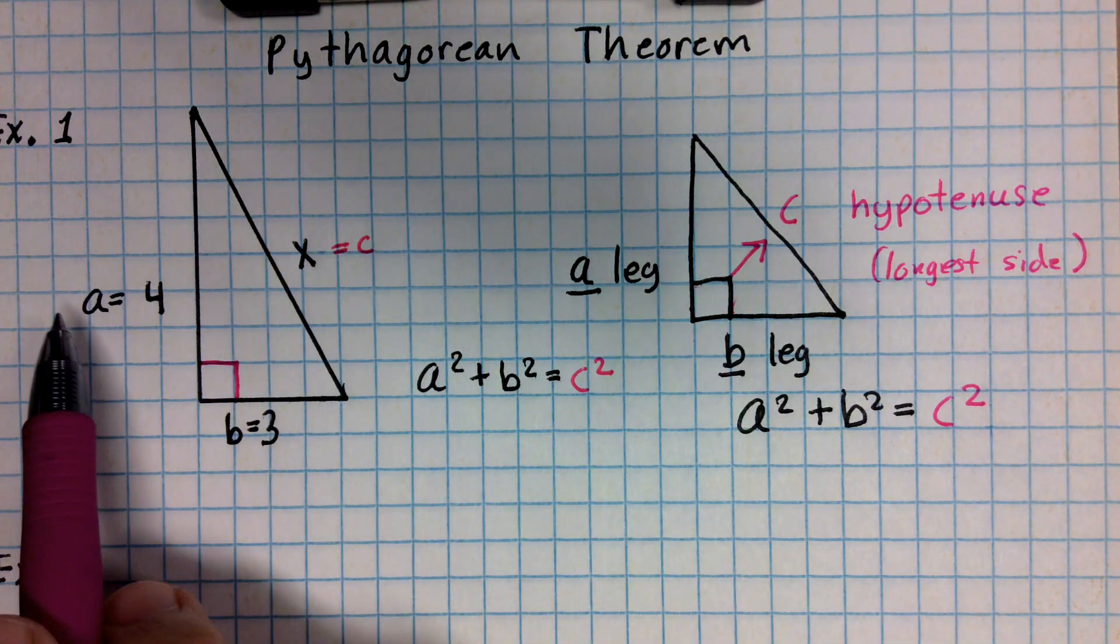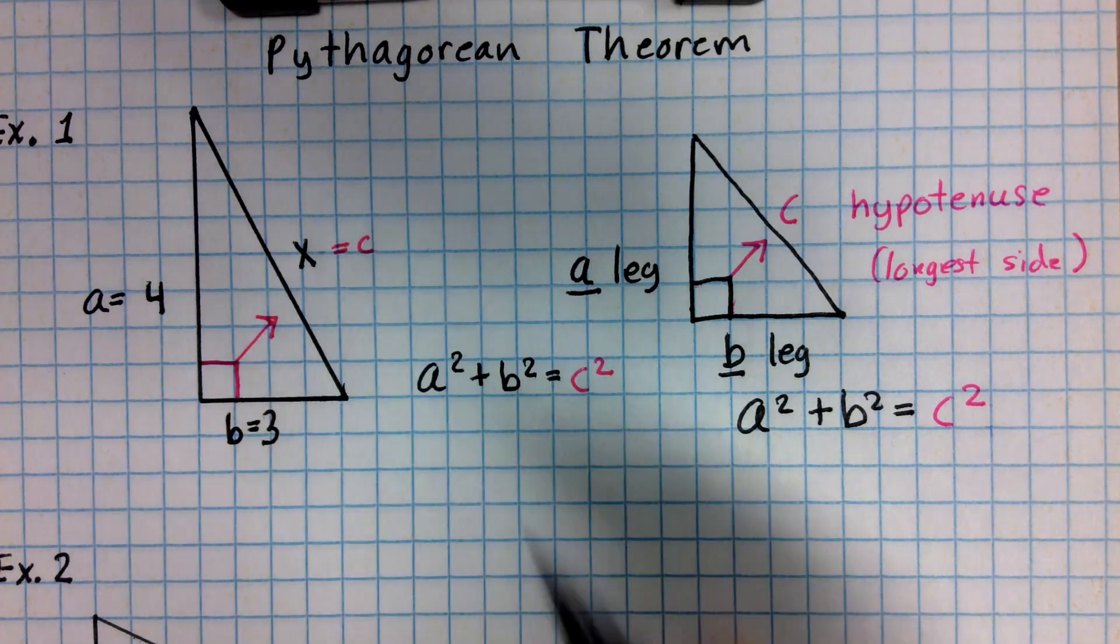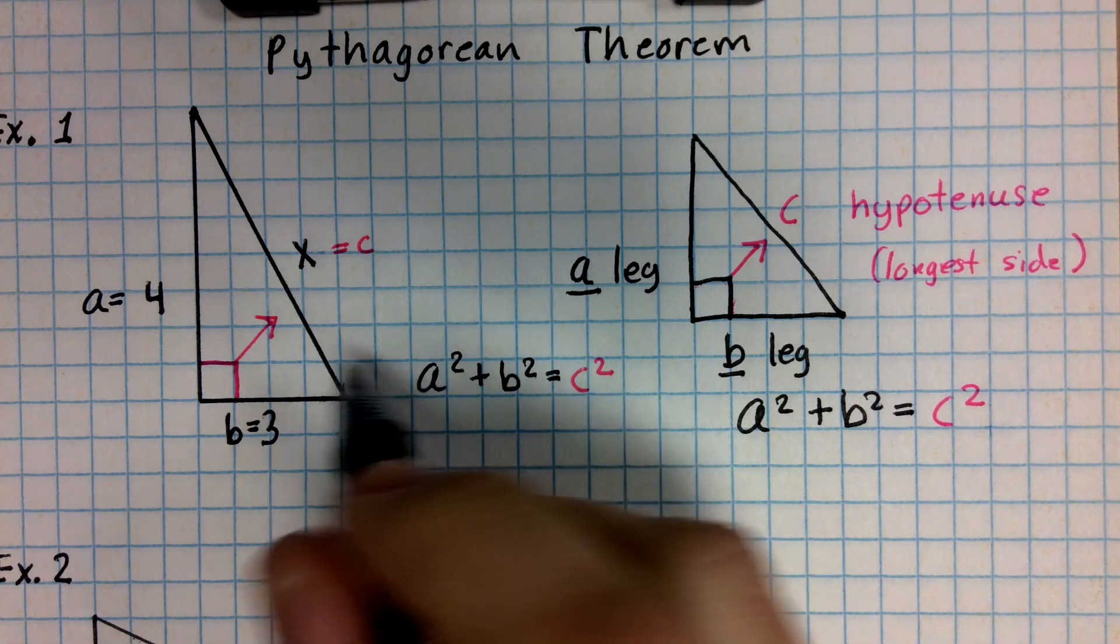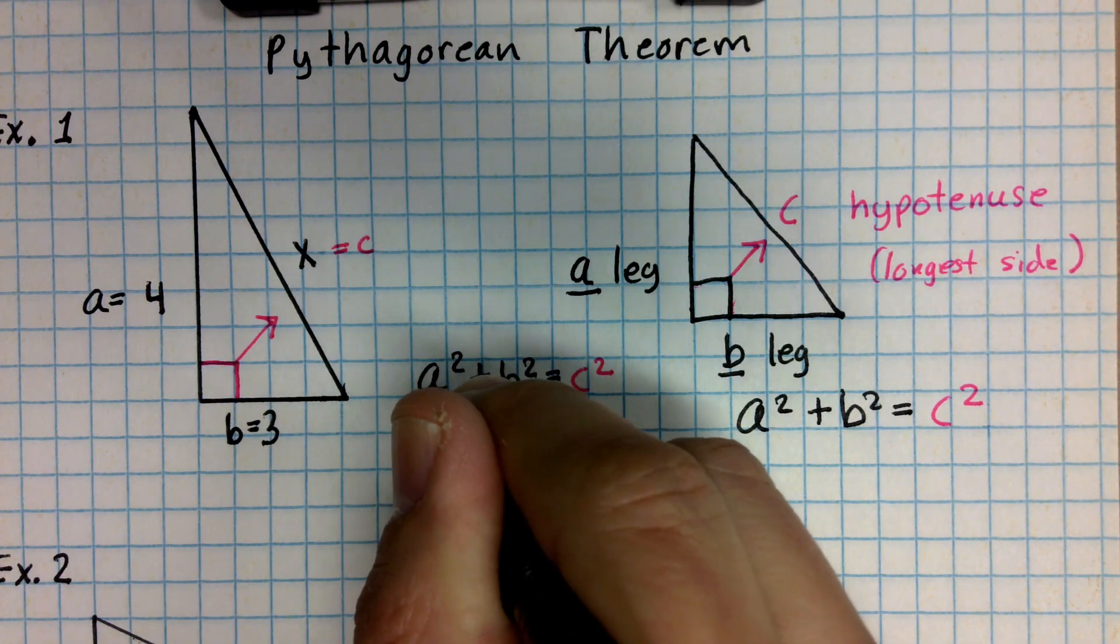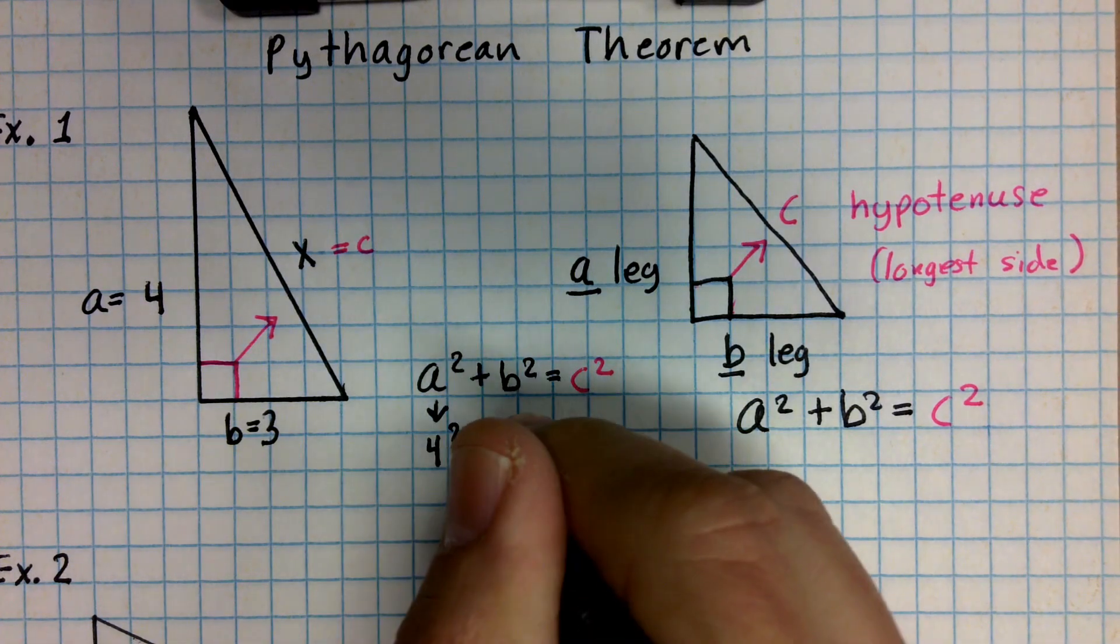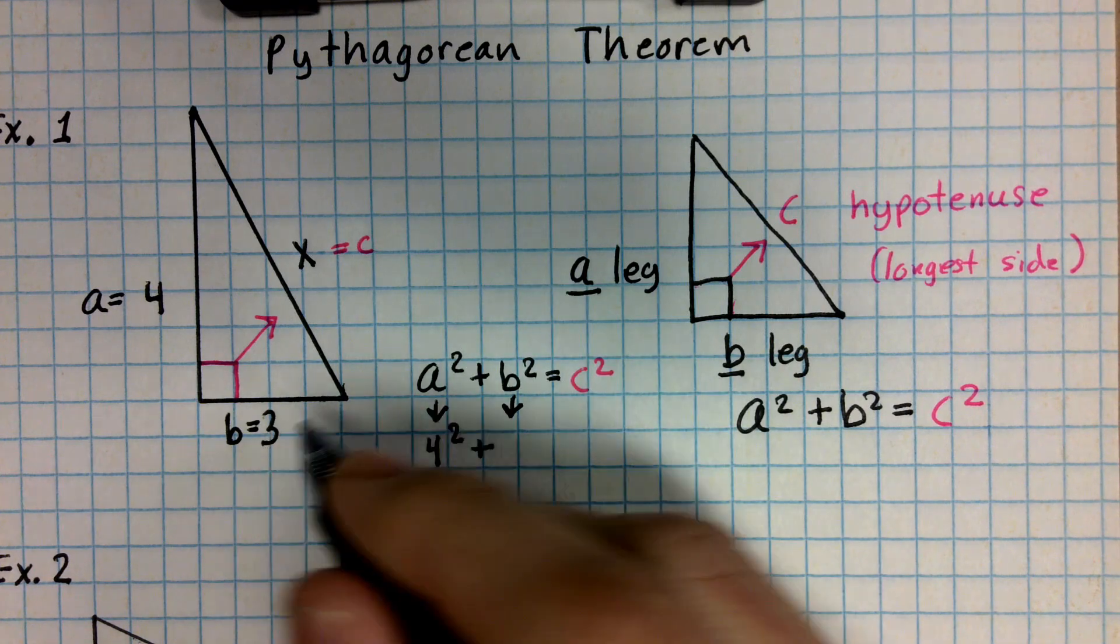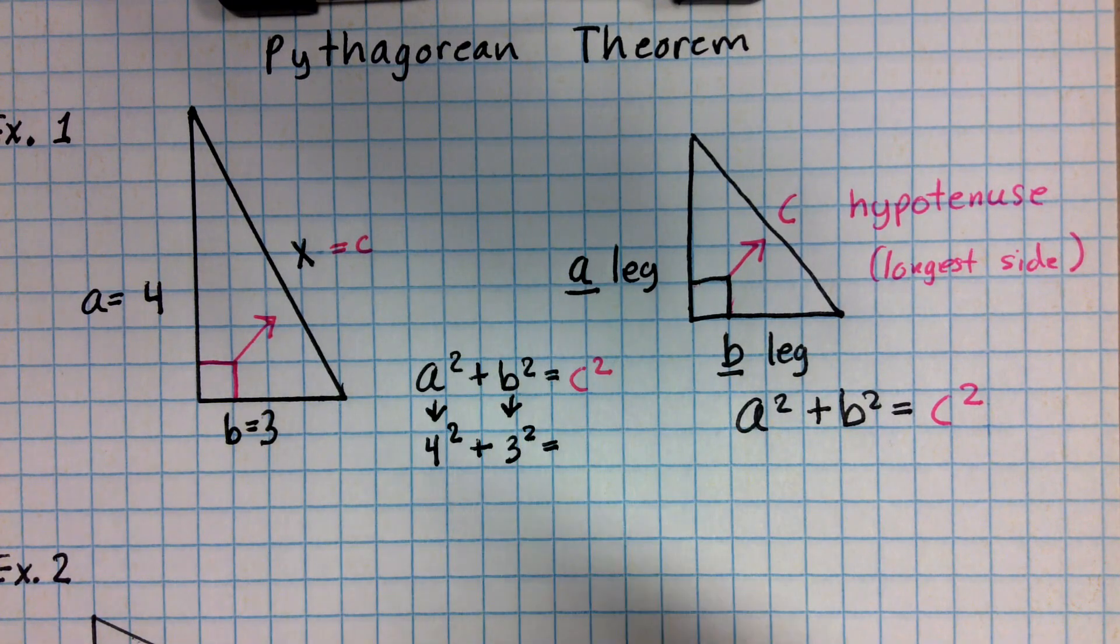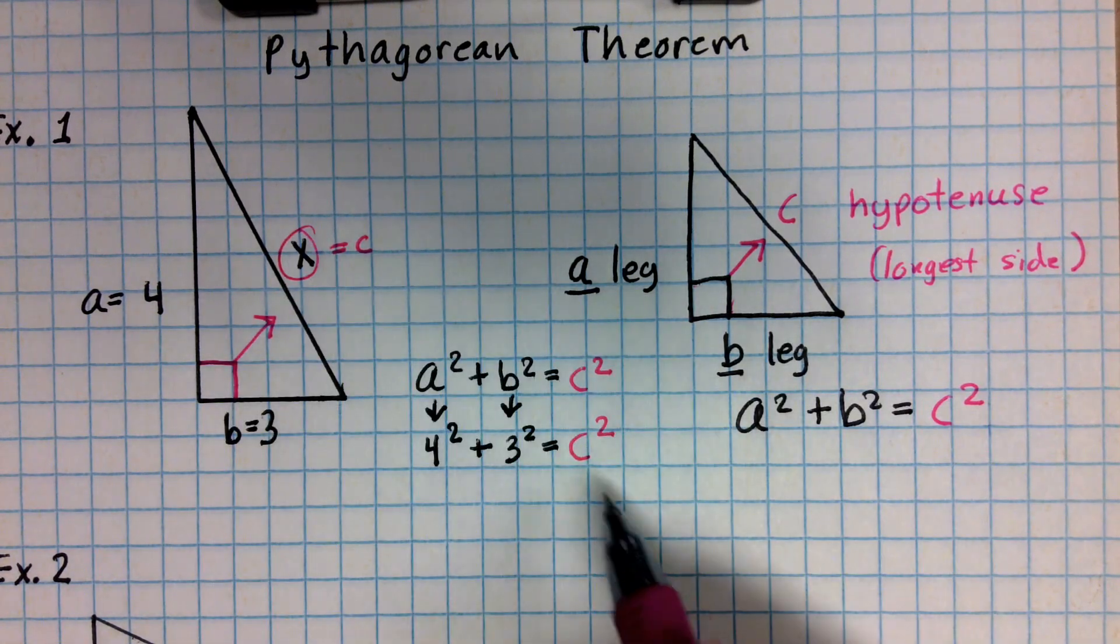So every time that I'm going to solve one of these, I go ahead and define A, B, and C. And that's because if I draw an arrow, C is right over there. Now, I'm going to go ahead and substitute the numbers. So for A, we have a 4. So in place of A, I am going to substitute 4 squared plus my B value, which happens to be 3. So that's 3 squared. And that's equal to C squared, right, which is really our X because that's what we're trying to find.